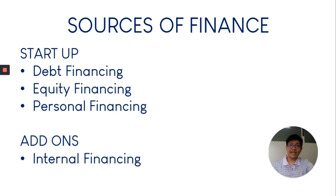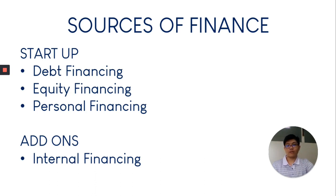So, how do we decide where we would get our finances? When starting up, we could choose personal finances if available. We have debt financing and we also have equity financing. Debt financing means we are going to take up loans. Equity financing means we are going to give up a portion of our ownership of the business and sell it in the stock market.